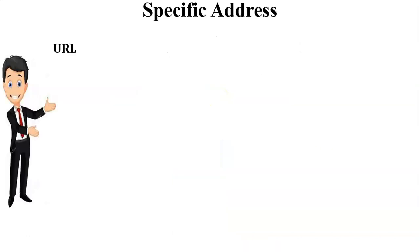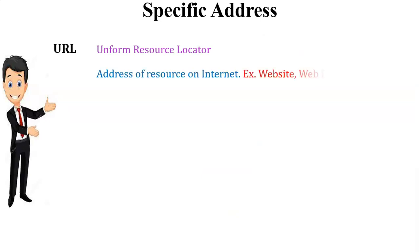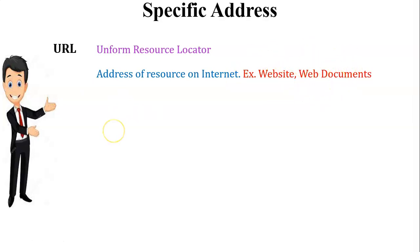The first one is the URL. The full form of URL is Uniform Resource Locator. URL is one kind of address of a resource on the internet. Through the URL we can access websites and web documents. Let us see an example of a URL.